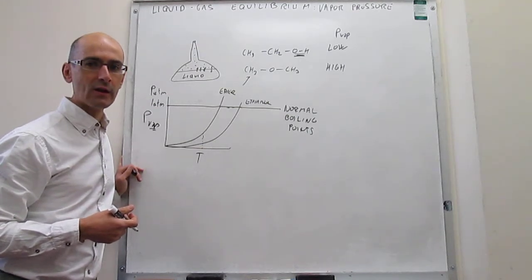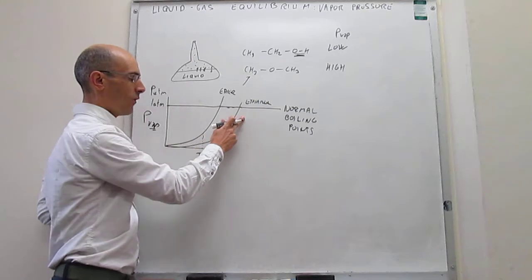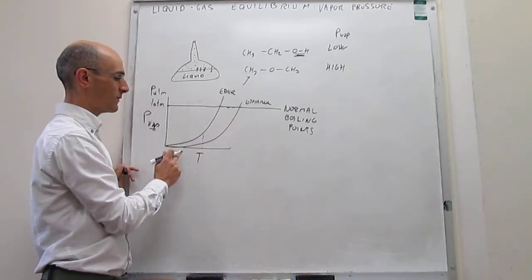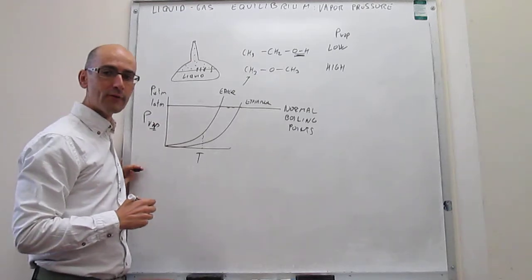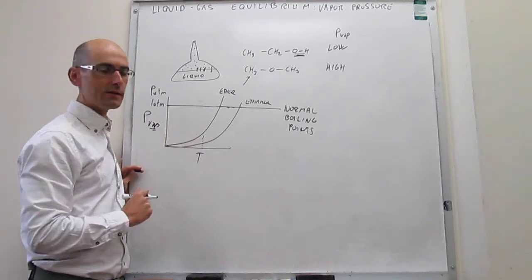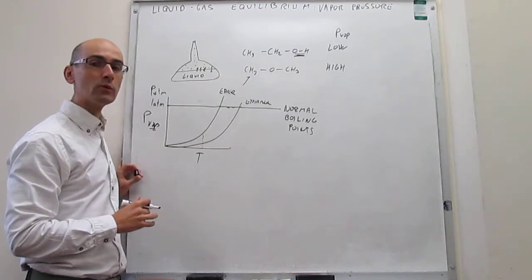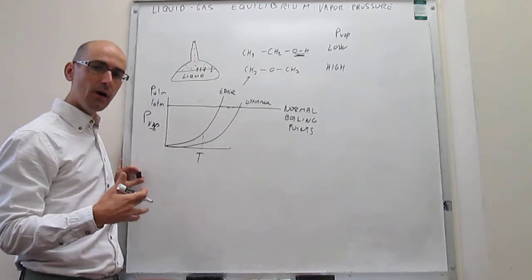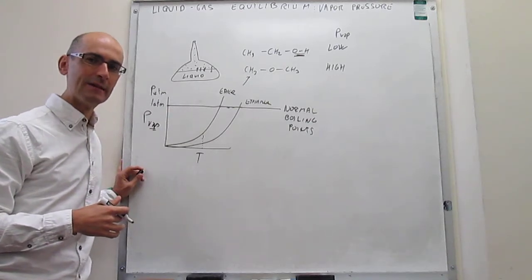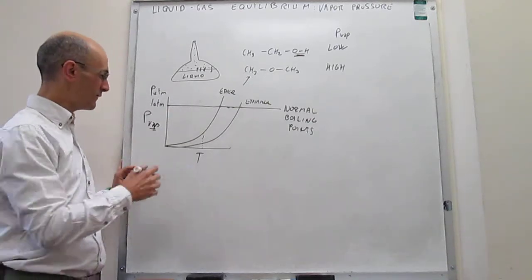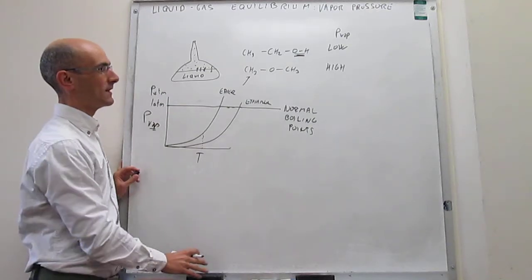Our question here is whether we can quantitatively determine the variation of vapor pressure with temperature. It turns out that we can do that fairly easily by recognizing that this is actually an equilibrium. We can take all of the knowledge gathered in our equilibrium studies to figure out quantitatively what this variation of pressure with temperature is.